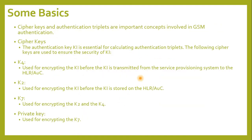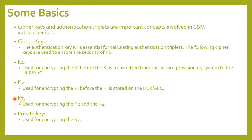Some basics. Cipher keys and authentication triplets are important concepts involved in GSM authentication. Cipher keys: The authentication key is essential for calculating authentication triplets. The following cipher keys are used to ensure security: K4 is used for encrypting the key before it is transmitted from the service provisioning system to the HLRAUC. K2 is used for encrypting the key before it is stored on the HLRAUC. K7 is used for encrypting K2 and K4. The private key is used for encrypting K7.